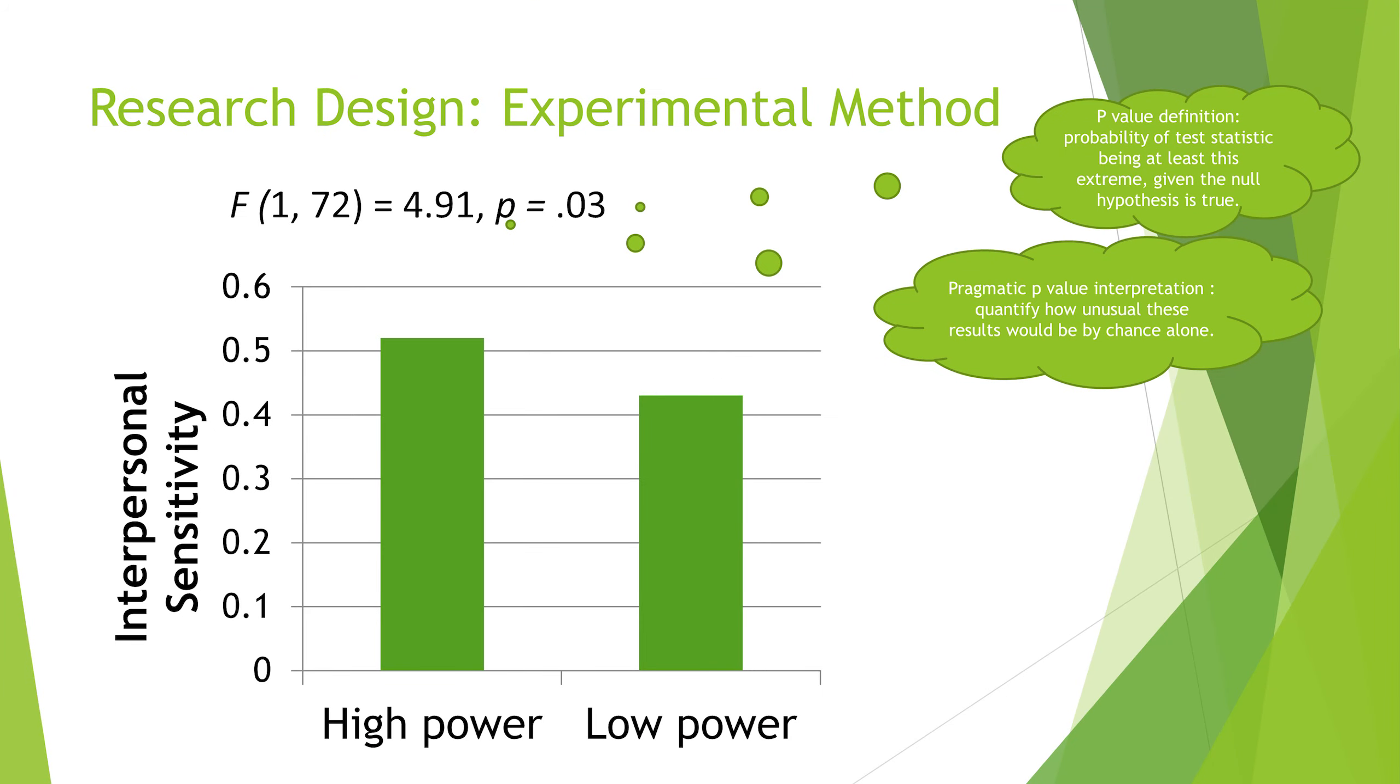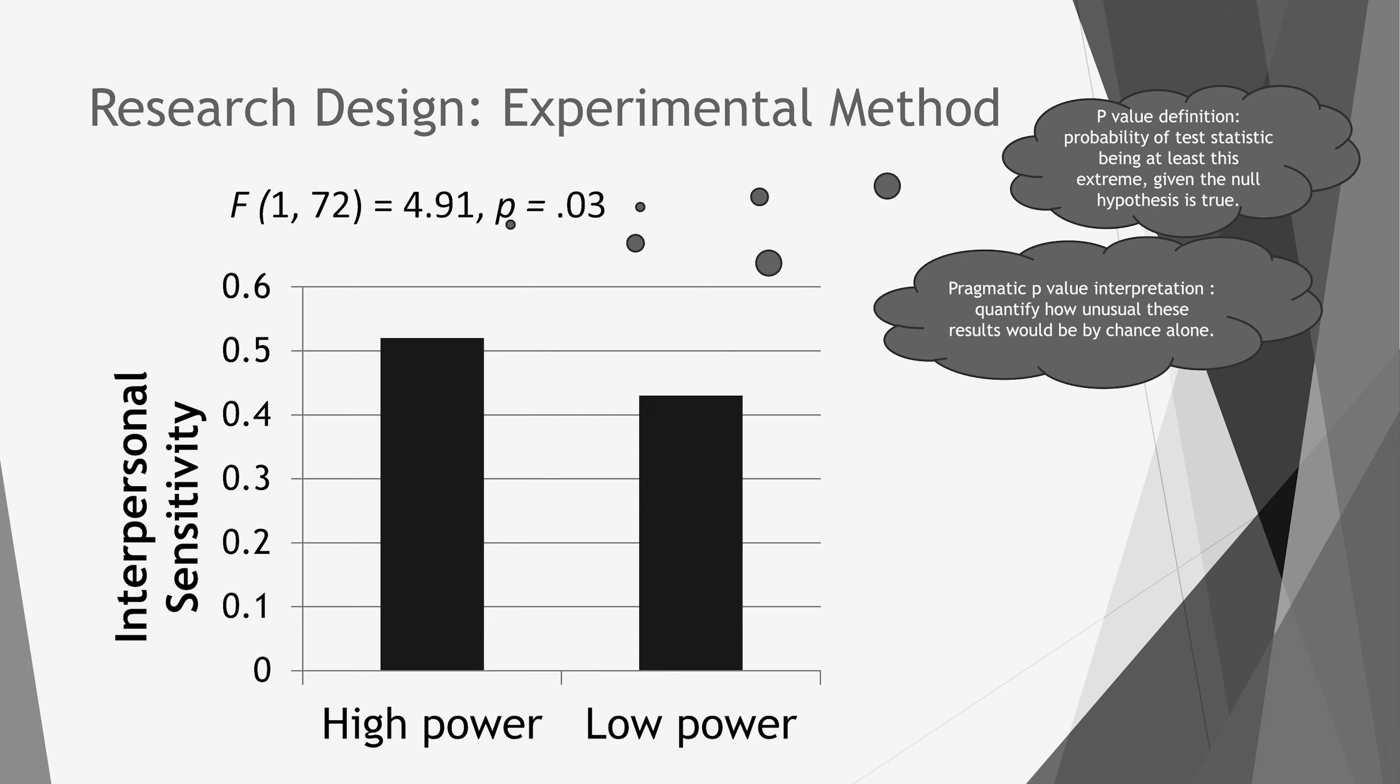And as we can see here, those in higher power scored higher on interpersonal sensitivity. And we can see this with this F statistic and this p-value. I know that this is not a statistics class as much as I want it to be, so I'm going to give you a very brief, quick and dirty way to think about p-value, because it's going to come up in your other classes.